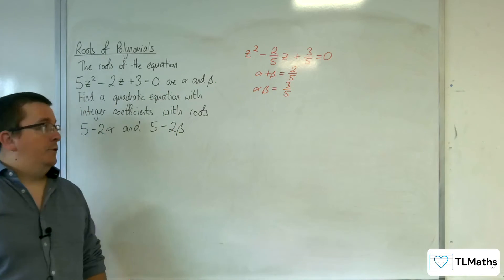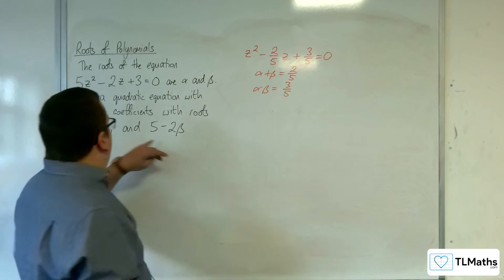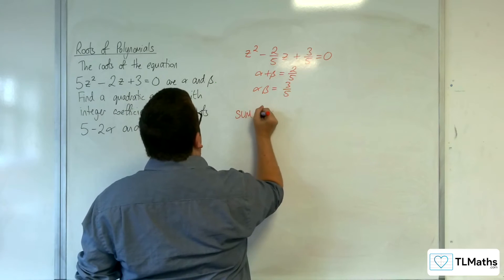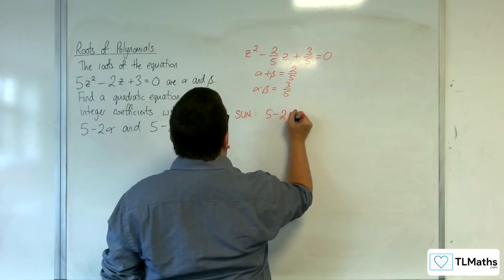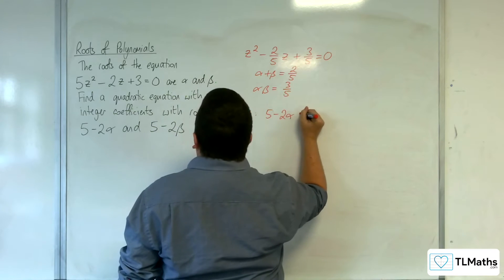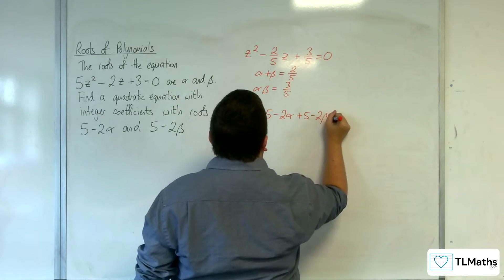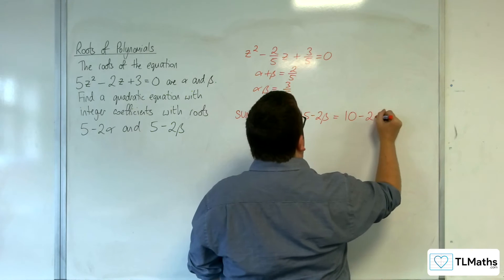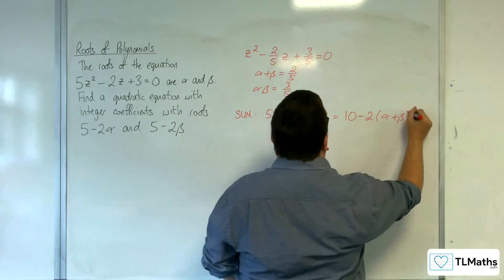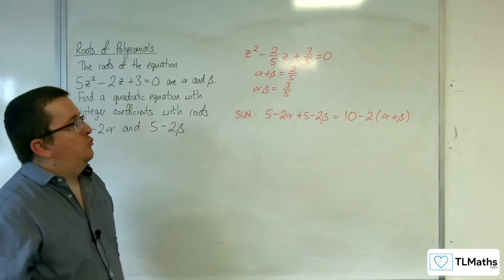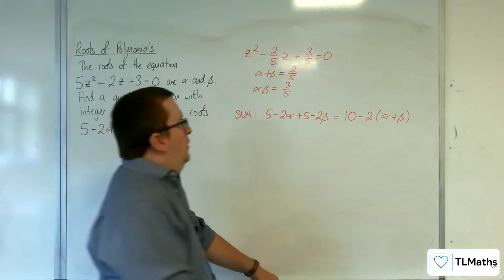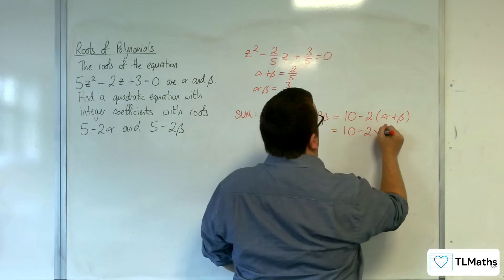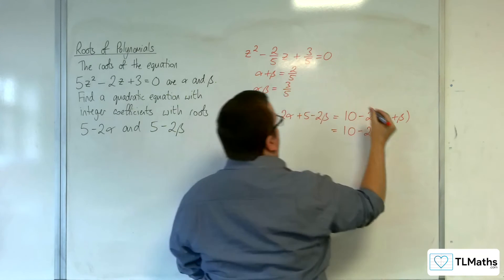Now these are the two new roots that we need to have. So the sum of those two roots: 5 take away 2 alpha plus 5 take away 2 beta is equal to 10 take away 2 lots of alpha plus beta. A bit of factorising there. So that's 10 take away 2 lots of 2 fifths.